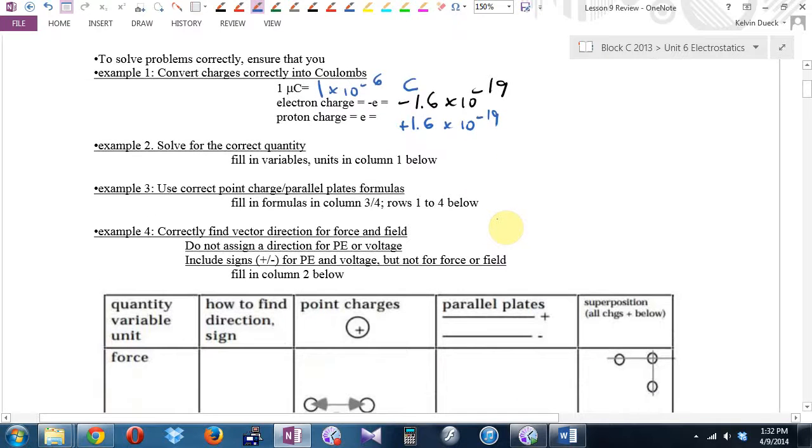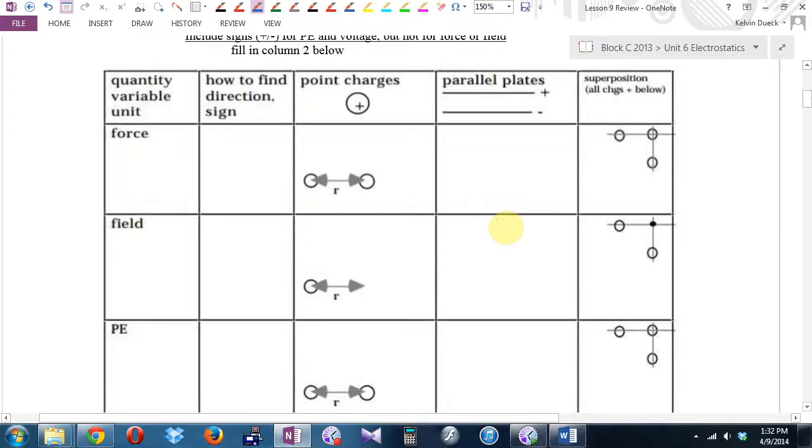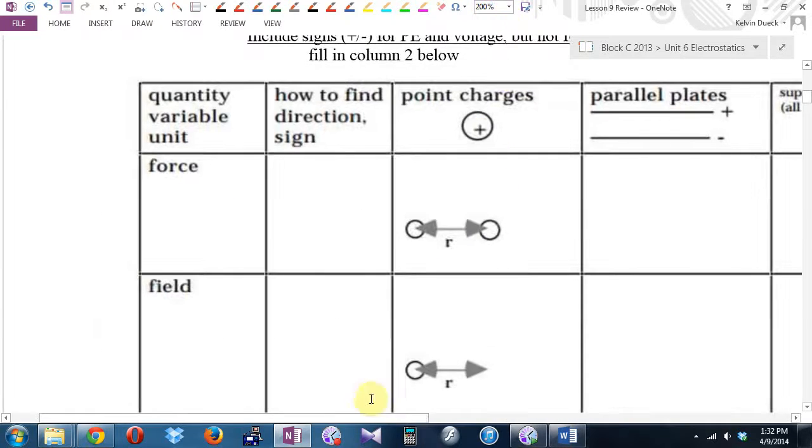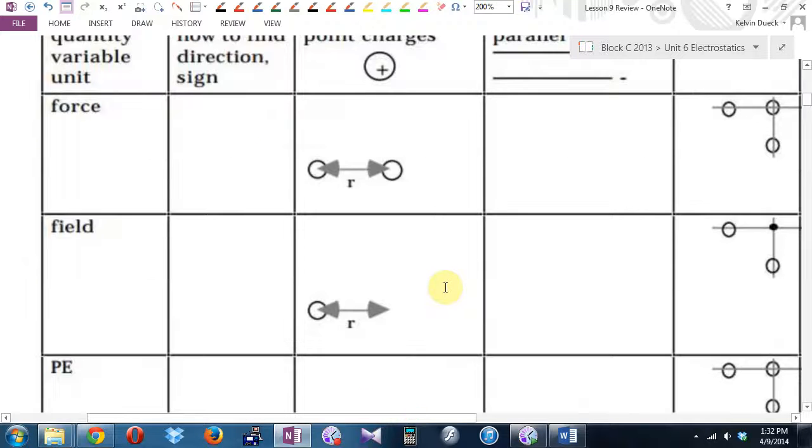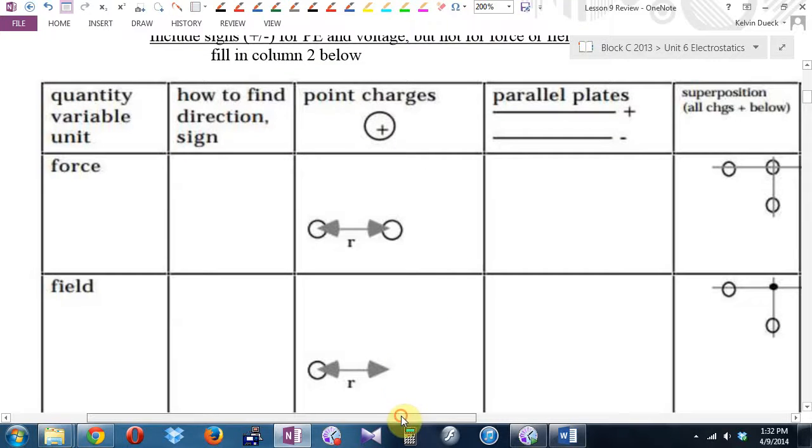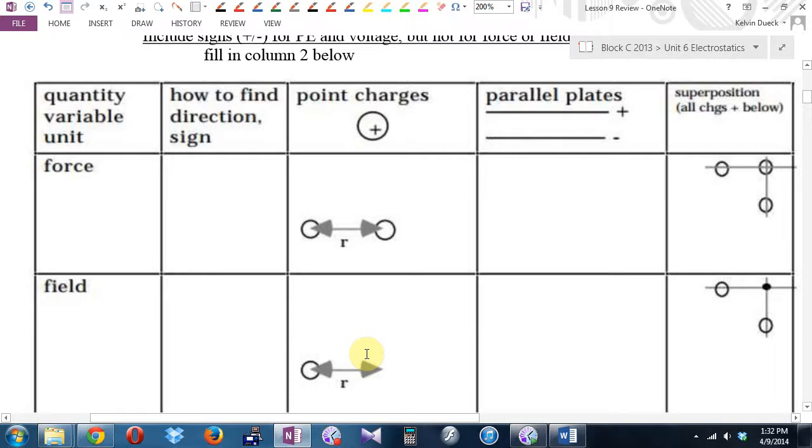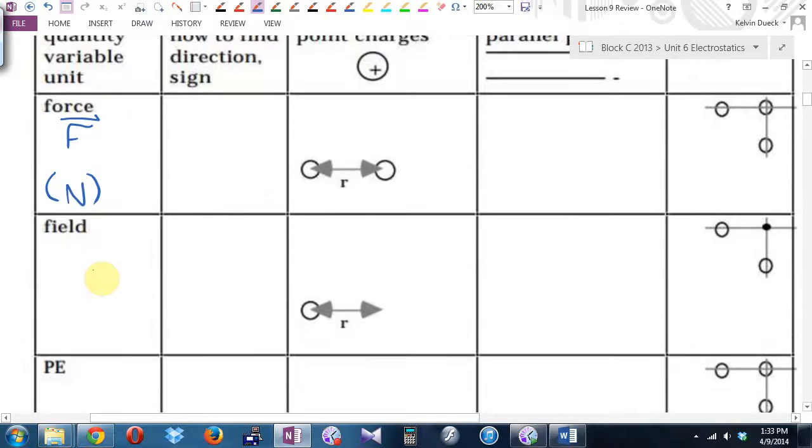So example two, I said, solve for the correct quantity, fill in the variables and the units in the column. But you know what? Here's a little chart. We're going to carefully, carefully, carefully go through this row by row. So the quantity, variable unit, force. What's the variable that we use for force? F. Measured in units. Newtons.